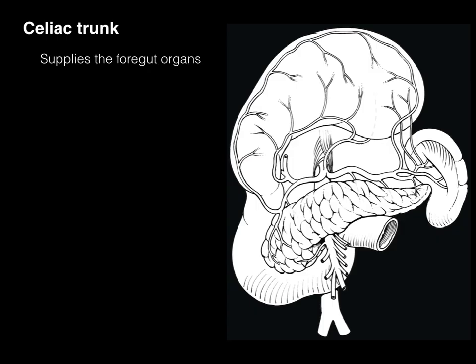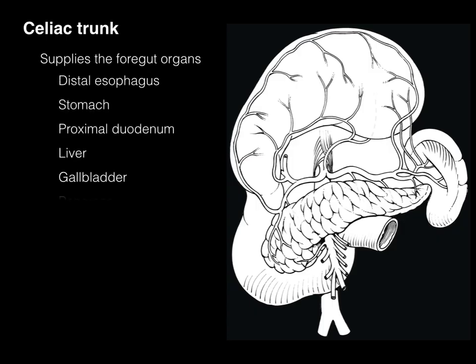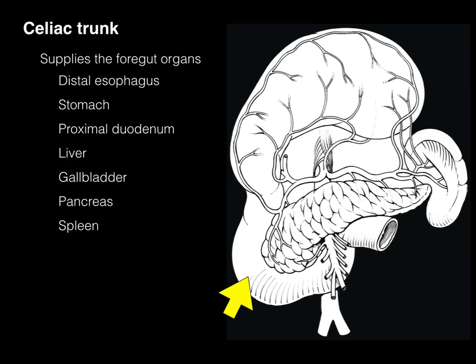The celiac trunk supplies the foregut organs, which include the distal esophagus — not seen in this picture — the stomach, and the proximal part of the duodenum. Halfway through the duodenum it transitions to the midgut, which is supplied by the superior mesenteric artery. It also supplies the liver and gallbladder, not shown in this illustration, as well as the pancreas and spleen.